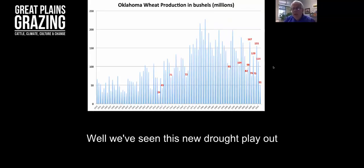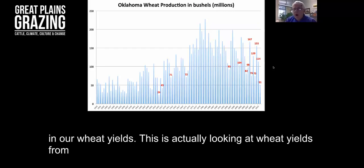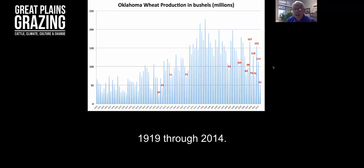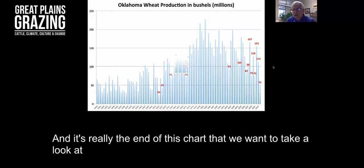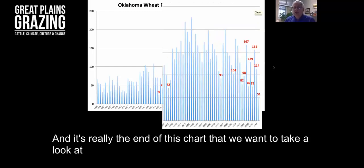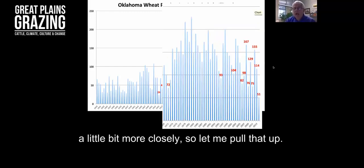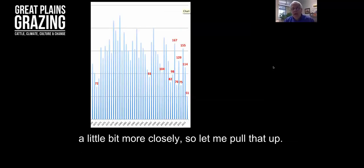We've seen this new drought play out in our wheat yields. This is looking at wheat yields from 1919 through 2014. It's really the end of this chart that we want to take a look at a little bit more closely.